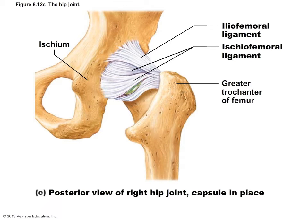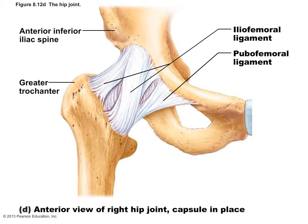Four ligaments reinforce the joint capsule surrounding the hip joint: the iliofemoral ligament, the pubofemoral ligament, the ischiofemoral ligament, and the ligamentum teres. The iliofemoral ligament is a strong, V-shaped ligament on the posterior aspect of the joint capsule, connecting the greater trochanter of the femur to the ilium, which makes up the superior portion of the acetabulum. The ischiofemoral ligament is a spiral ligament connecting the greater trochanter to the inferior portion of the acetabulum. The pubofemoral ligament, visible anteriorly, unites the lesser trochanter to the pubic arch. Together, these four ligaments reinforce the joint capsule and screw the femoral head into the acetabulum when standing. The main structures preventing hip dislocation are the deep acetabulum and the strong capsular ligaments surrounding it.